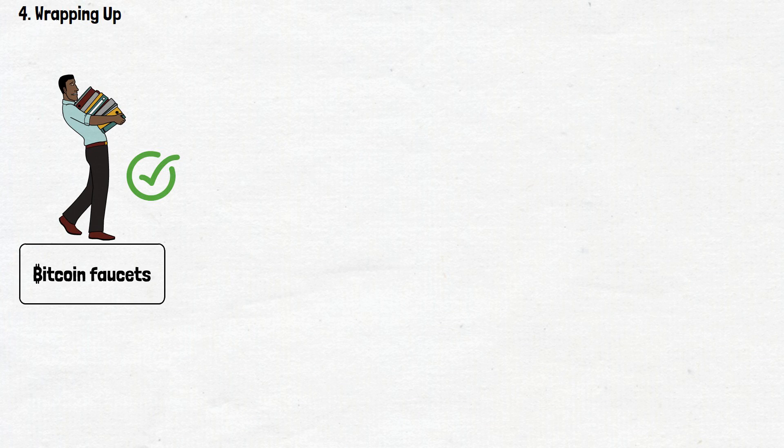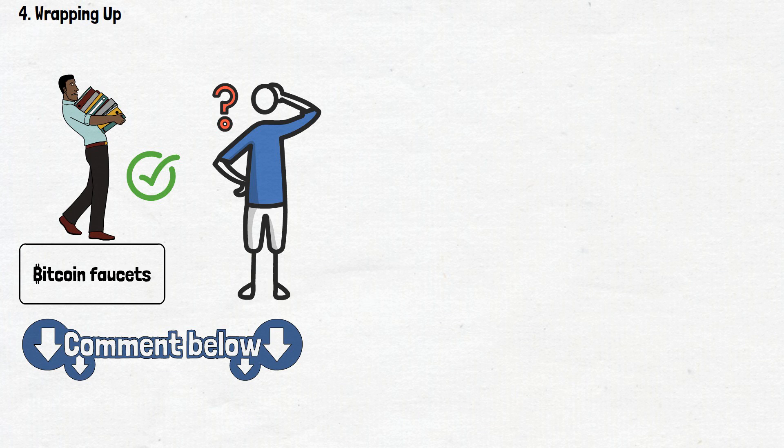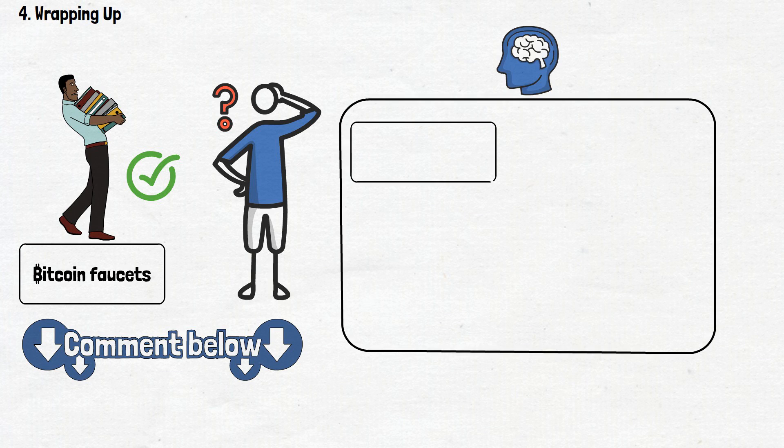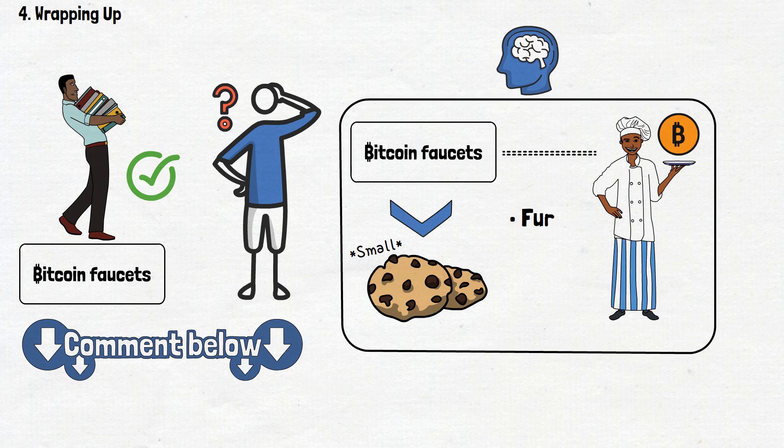That wraps up our Bitcoin faucet exploration. I think we've covered all of the basics on what is a Bitcoin faucet and how it works. Still, if you have any questions, be sure to leave them in the comment section below. Remember, Bitcoin faucets are like the appetizers of the crypto world. They're small but are still a great way to get a taste of what's out there. They're fun, educational, and hey, who doesn't love free stuff?